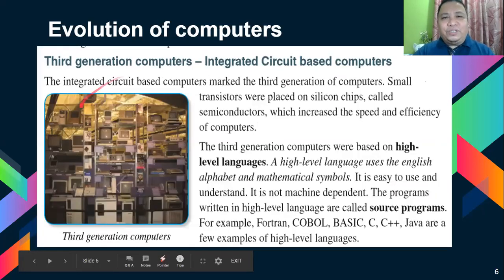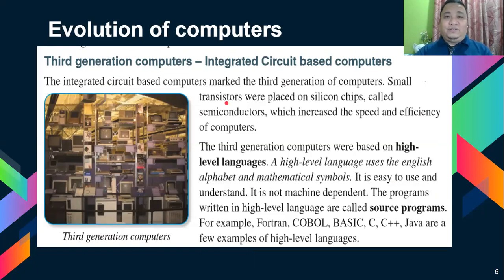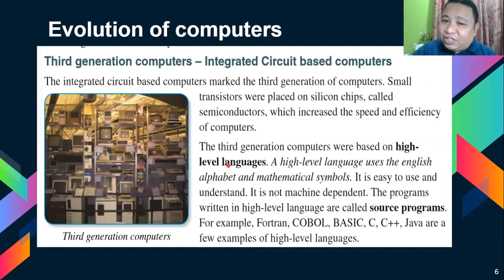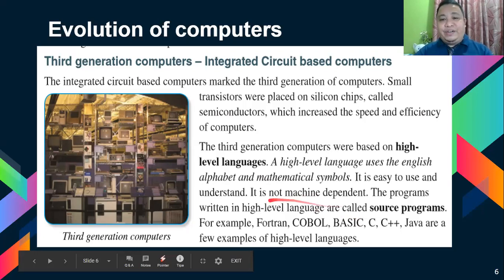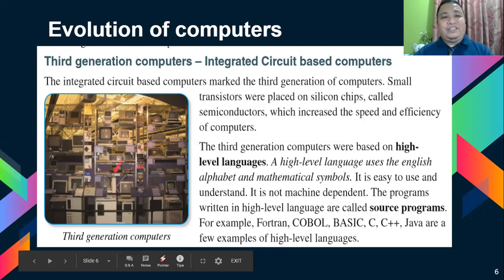We also have third generation computers. This is the time when ICs — integrated circuits — were invented. Those small transistors were placed on silicon chips called semiconductors to increase the speed and efficiency of the computer. Third generation computers were based on high level language — which uses the English alphabet and mathematical symbols, is easy to use and understand, and is not machine dependent. Programs written in high level language are called source programs. Examples include C, QBasic, and Java.